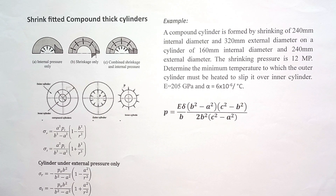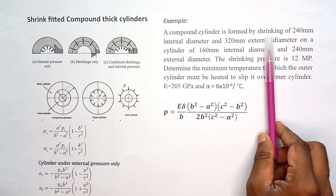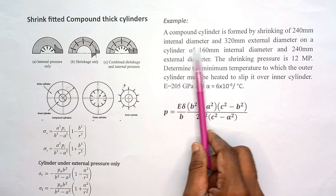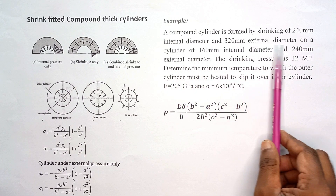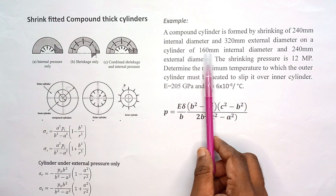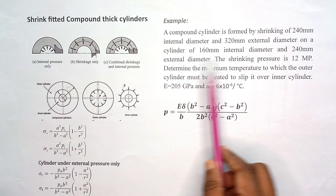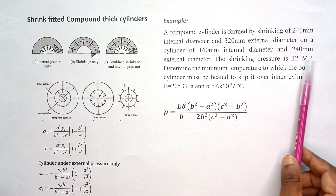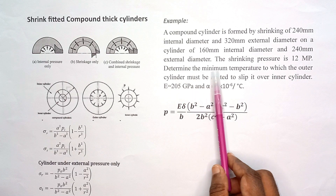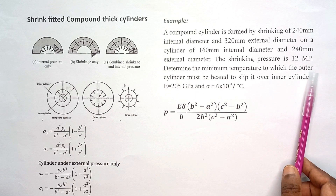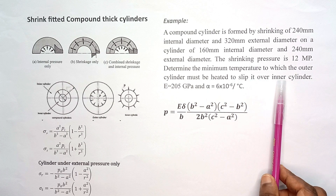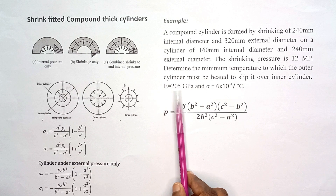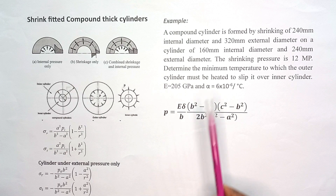In this video I'm going to explain a problem related to the shrink fitting process. The problem we are going to discuss: a compound cylinder is formed by shrink fitting of a 240 millimeter internal diameter and 320 millimeter external diameter onto a cylinder of 160 millimeter internal diameter and 240 millimeter external diameter. The shrinkage pressure developed is equal to 12 megapascal. Determine the minimum temperature to which the outer cylinder must be heated to slip it over the inner cylinder. The elastic modulus of the material and the thermal expansion coefficient are also given.